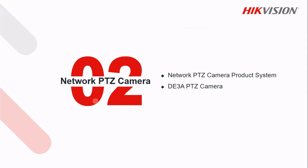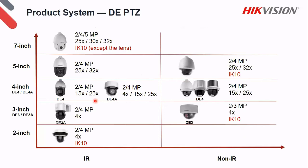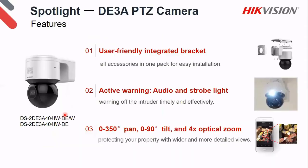Now let's look at network PTZ cameras — a quick breakdown. We've got non-IR versions with no illumination, IK10 vandal-proof versions, and devices with IR built in, also with IK10. Resolutions are 2 and 4 megapixels, going up to 5 megapixels on the DE series. Remember, this is the run rate type of PTZ — we'll talk about project-level PTZ in another session. Today we'll focus specifically on the D3A model.